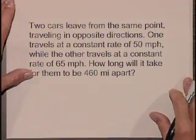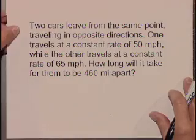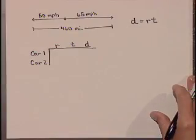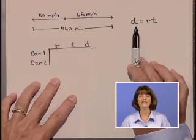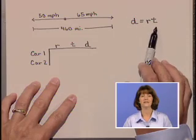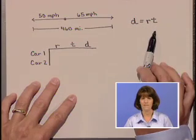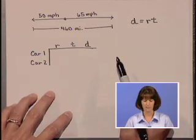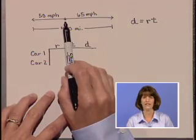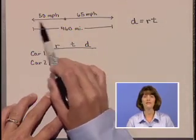Now we should be able to recognize this as a distance, rate, and time problem, so as a first step, let's write down the equation distance is equal to rate times time, or D equals RT. And I think a picture is helpful at this next step. We've got cars starting at the same point, going in opposite directions.